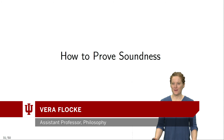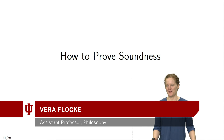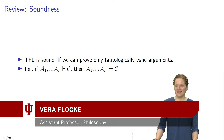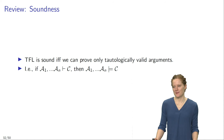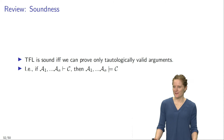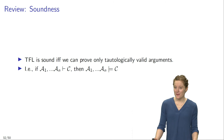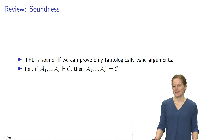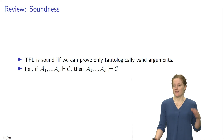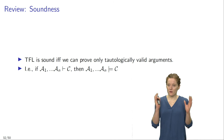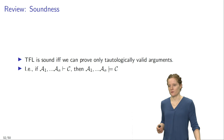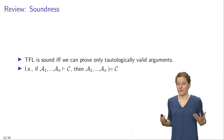How can we prove that TFL is in fact sound? Let's start by reviewing some core concepts. TFL is sound if and only if we can prove only tautologically valid arguments. That means that if there is a proof of a conclusion C from premises a1 to an, then the argument from a1 to an to conclusion C is tautologically valid — meaning every valuation that makes all the premises true also makes the conclusion true.